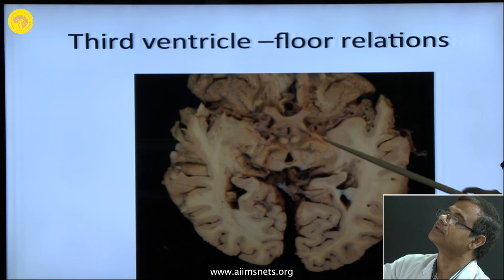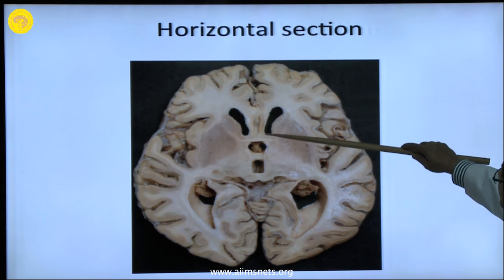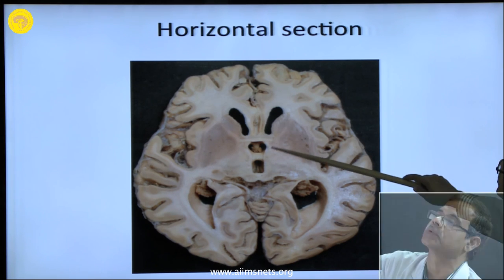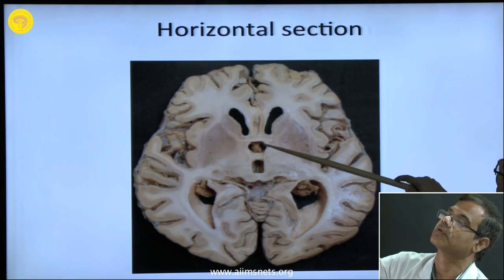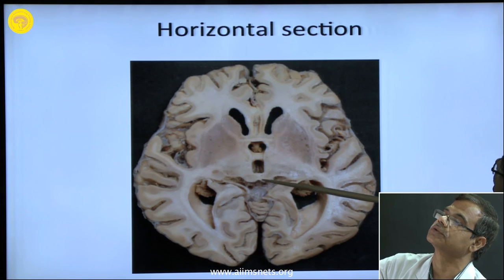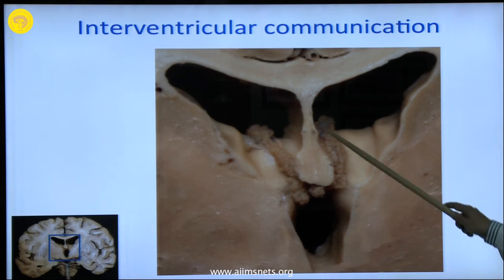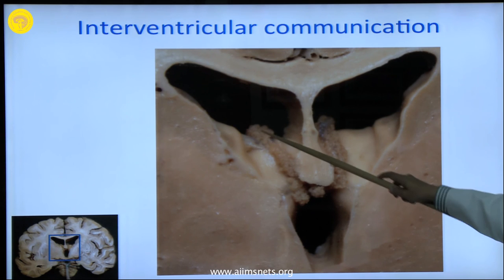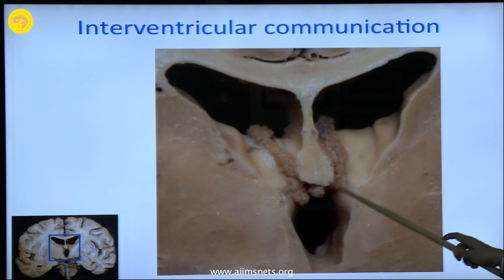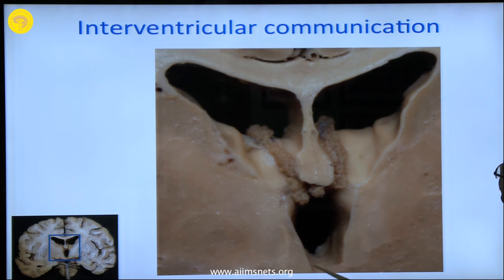This is the optic tract going to the lateral geniculate body. This is the third ventricle — the anterior commissure is here and some part of the anterior horn of the lateral ventricle has come. This is the adhesion between the two thalami, and you can see the interventricular foramen. The two colliculi are also seen and the posterior horn of the lateral ventricle has come. In both sides the choroid plexus is seen. This is the body of the lateral ventricle and the third ventricle leading to the midbrain.